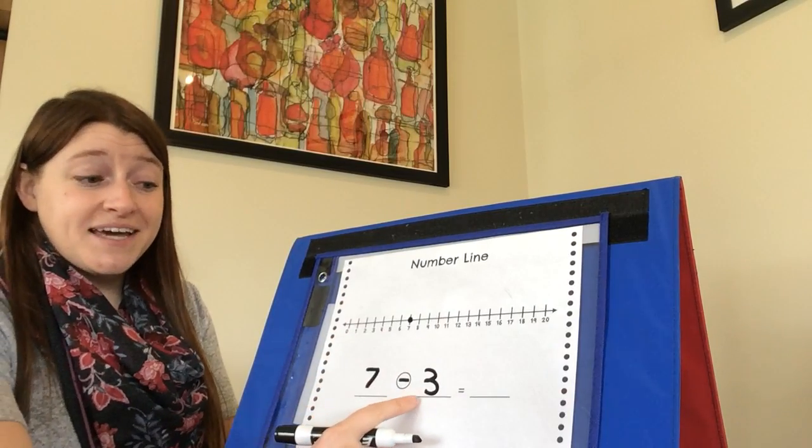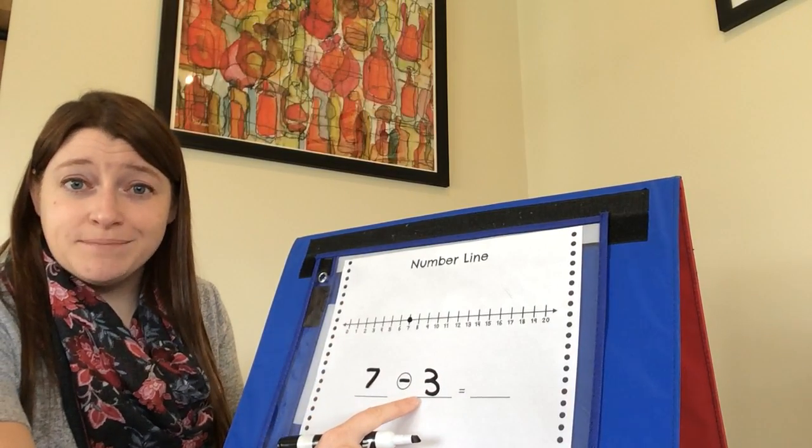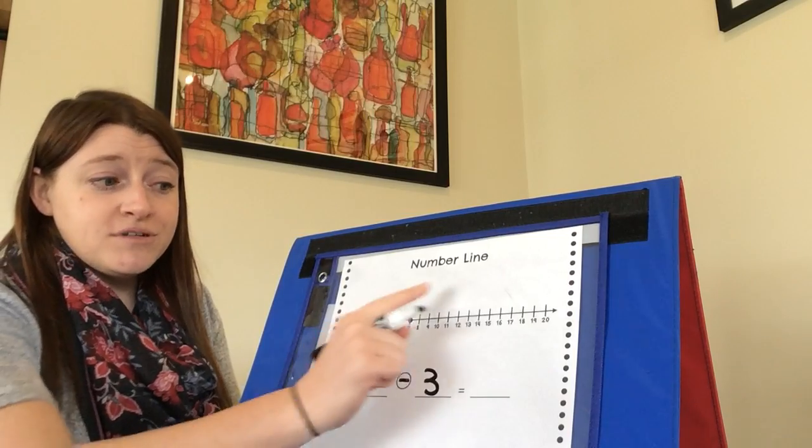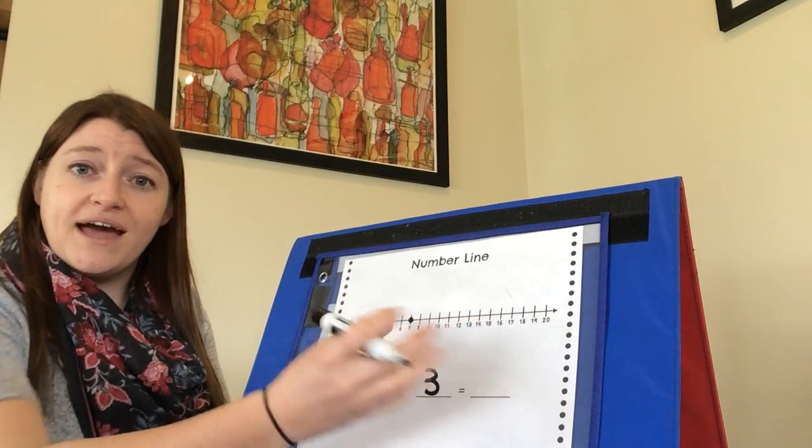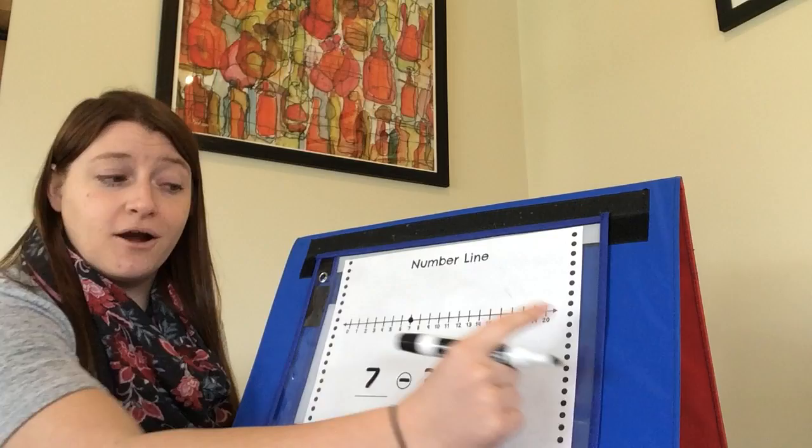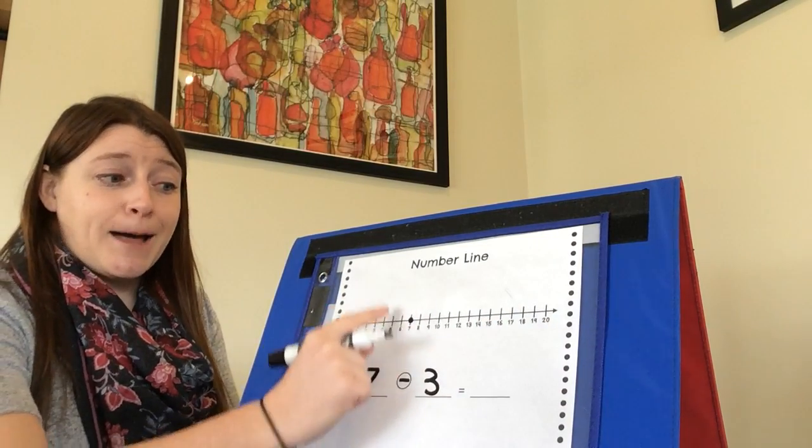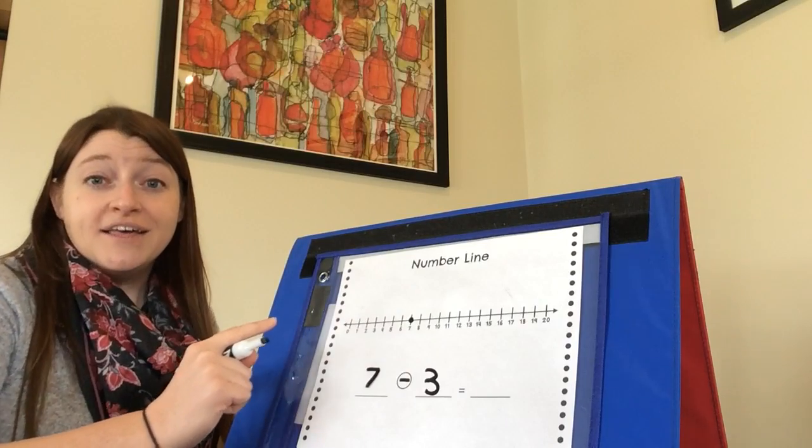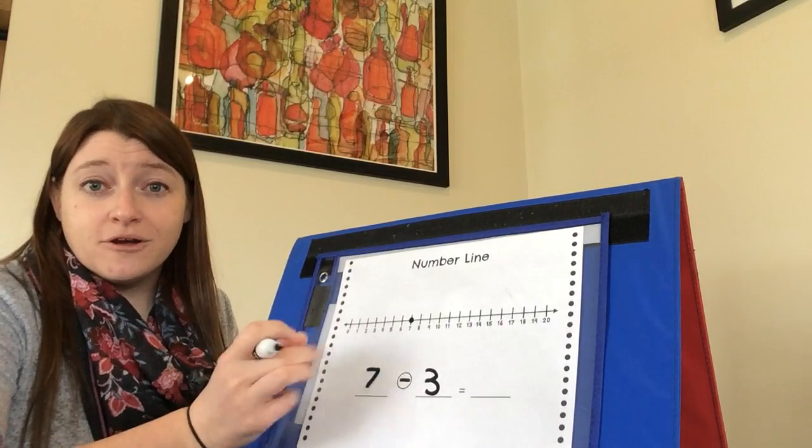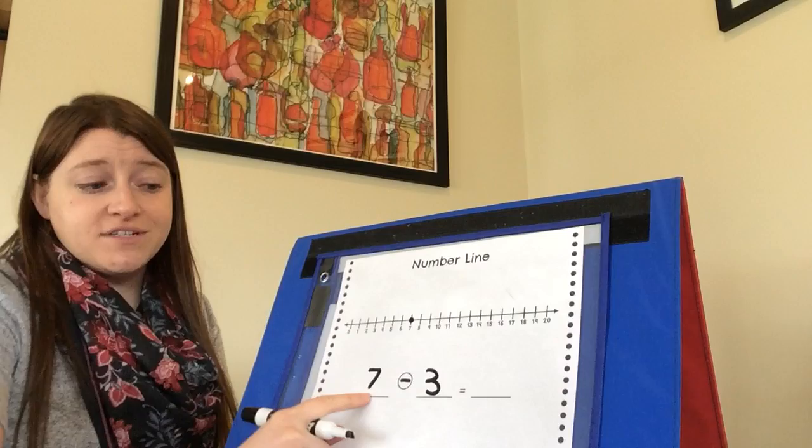Now the second number will tell us how many hops to take, but in addition we were taking hops forward because we were adding numbers together and getting bigger. In subtraction we're taking away, so we actually need to hop backwards on the number line so we can make our number smaller. We're taking away from the first number that we have.